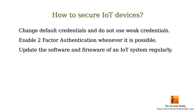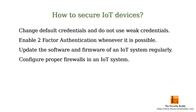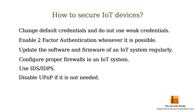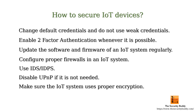More updated software or firmware means fewer known security vulnerabilities. No device should connect to the internet without using a proper firewall. Use an intrusion detection system, or intrusion detection and prevention system, if possible, and disable UPnP if it is not needed. Please ensure that the IoT system uses standard encryption protocols to encrypt the collected data.